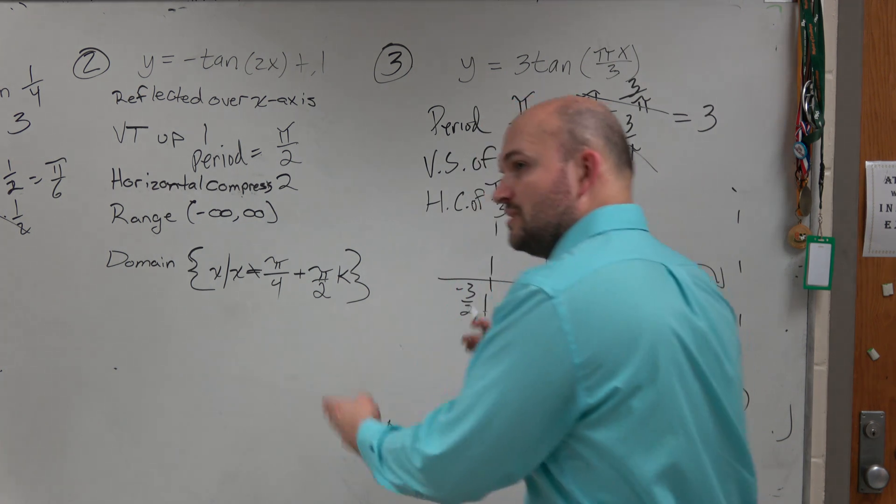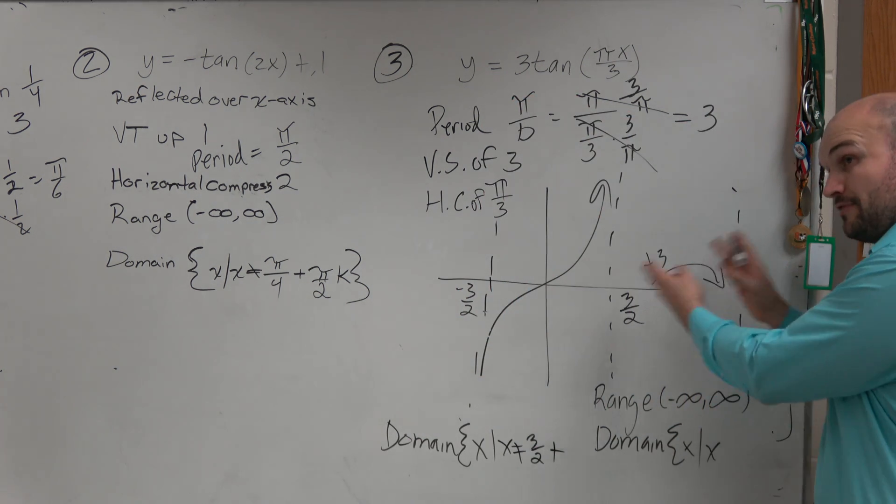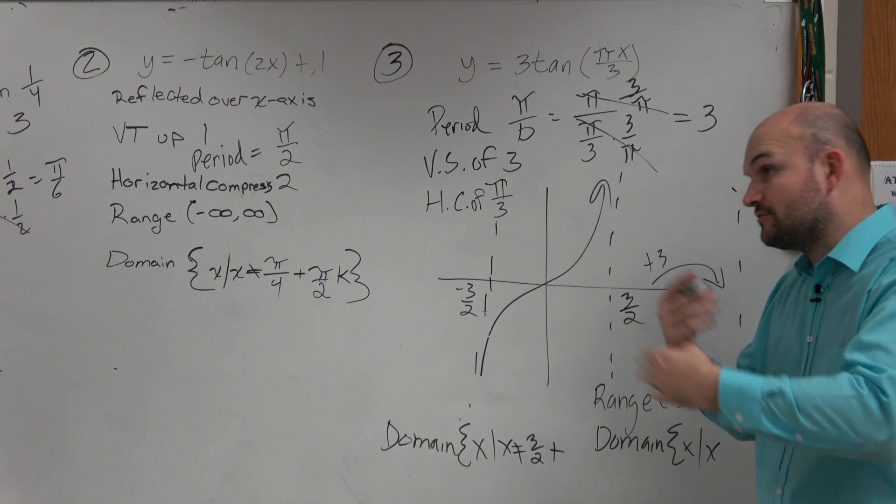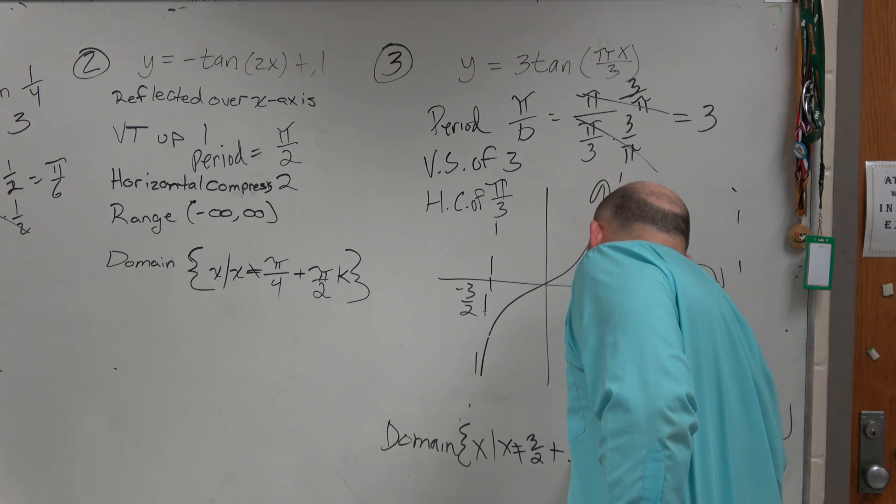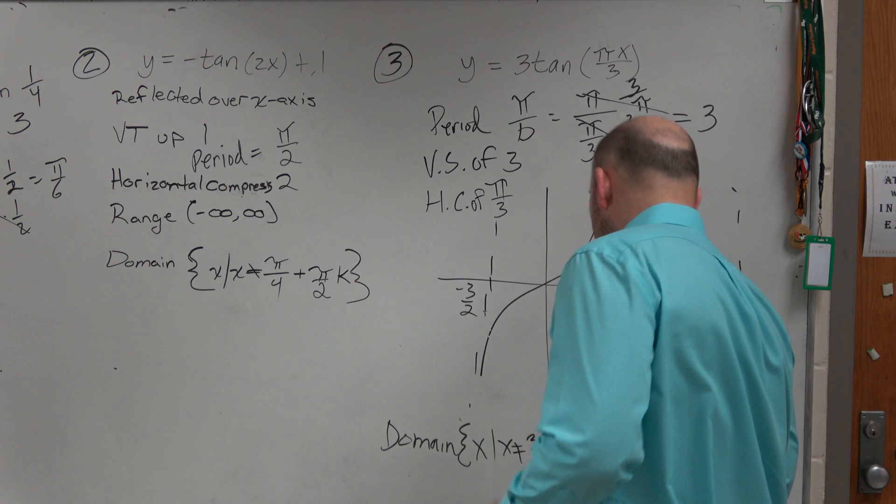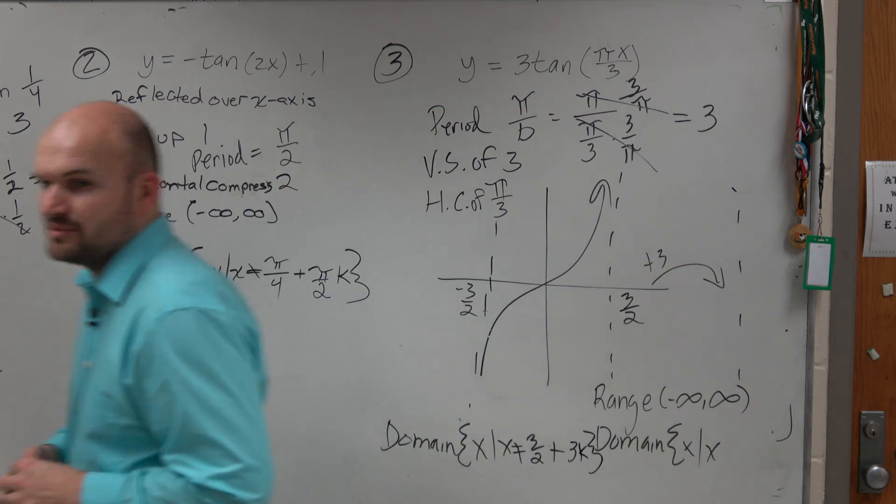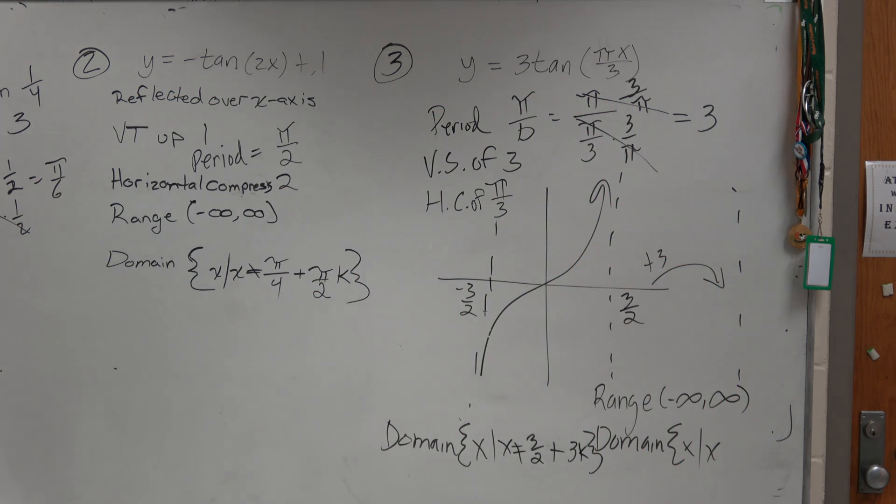And then plus, when's the next one going to occur? At 3, right? And we could add 3 or subtract 3 as many times. So we could say 3k, where k represents the number of times we could add or subtract the asymptote, which is infinite.